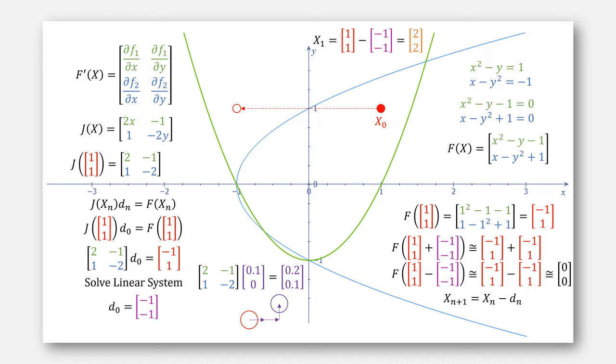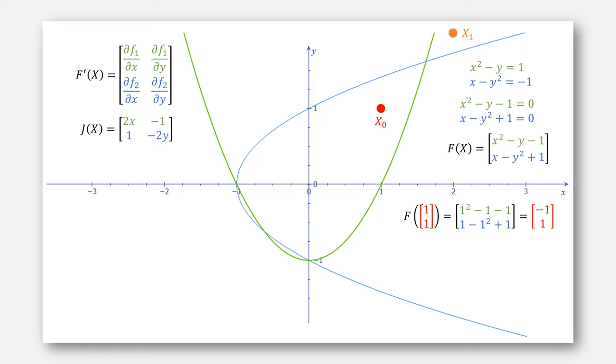As our example, starting with the point 1, 1, subtracting our value for d gives us an answer of 2, 2, plotted right there. This value x1 is indeed closer to our solution, but when we plug it in to our function for F, the transformation isn't all that much closer.